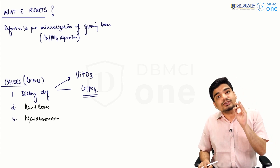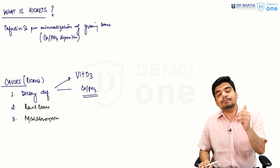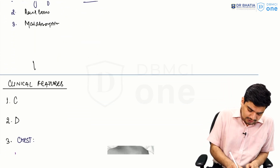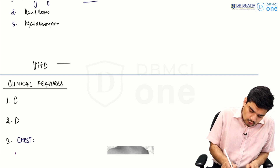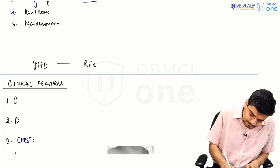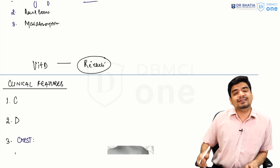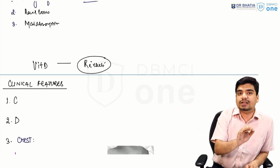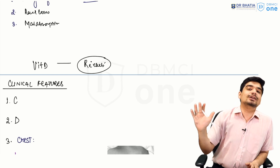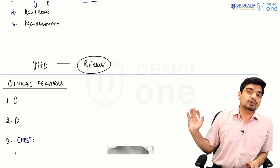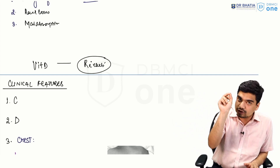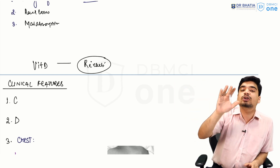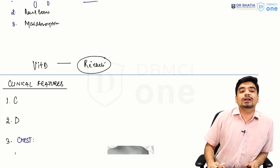Now let's discuss the clinical features of rickets, particularly in vitamin D deficiency. Remember, rickets is not exclusively vitamin D deficiency — rickets occurs whenever there is poor mineralization of growing bones. Growing is important because if there is poor mineralization of already grown or formed bone, it is called osteomalacia, not rickets.